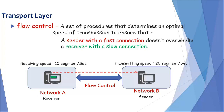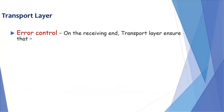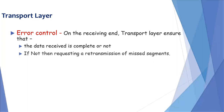The next function of transport layer is error control. On the receiving end, transport layer ensures whether the data received is complete or not. If not complete, then it requests a retransmission of missed segments.